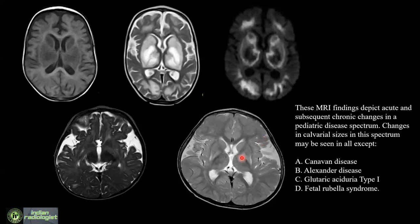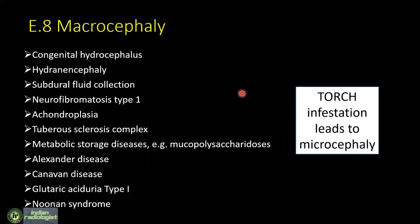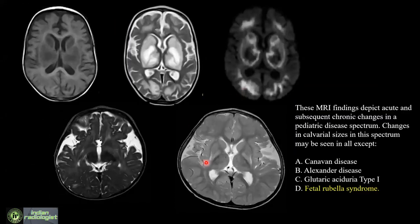The majority diagnosed it as glutaric aciduria type 1, which is correct, but the answer as per the question asked is D — fetal rubella syndrome. In glutaric aciduria type 1, you see restricted diffusion and T2 hyperintensity with edema in bilateral basal ganglia acutely; chronically, the sylvian fissures widen and the basal ganglia remain T2 hyperintense.